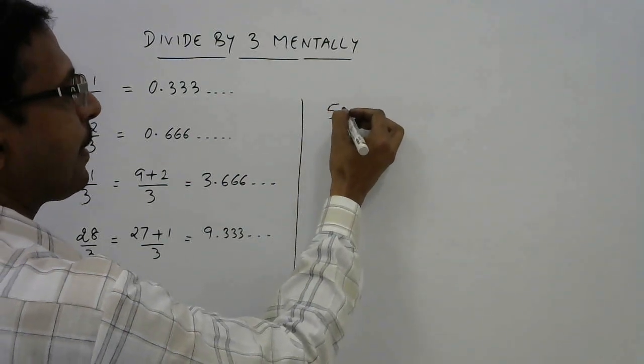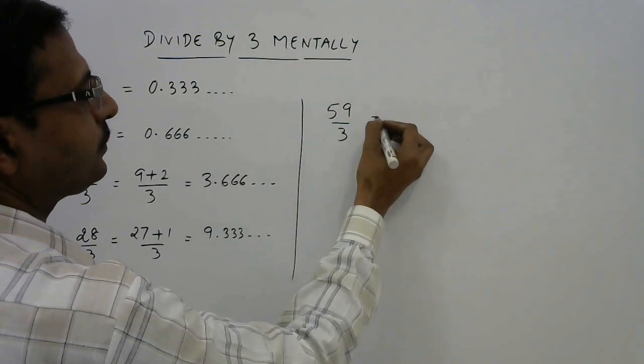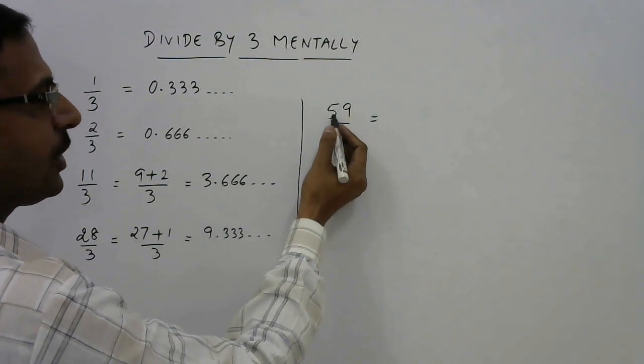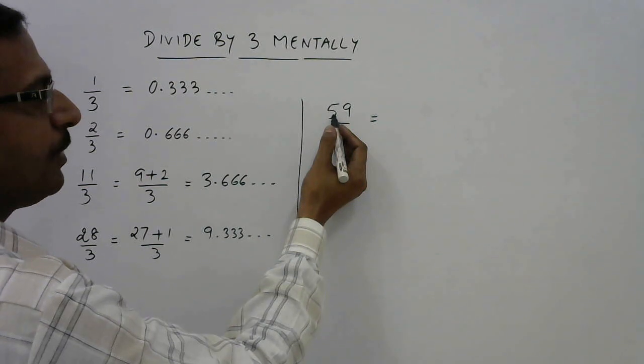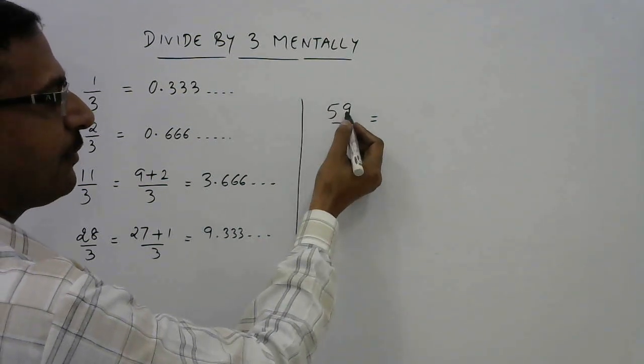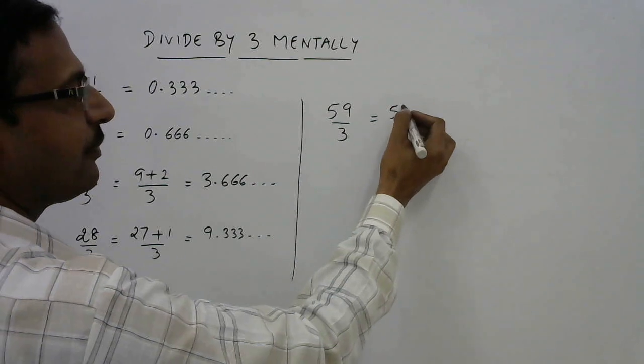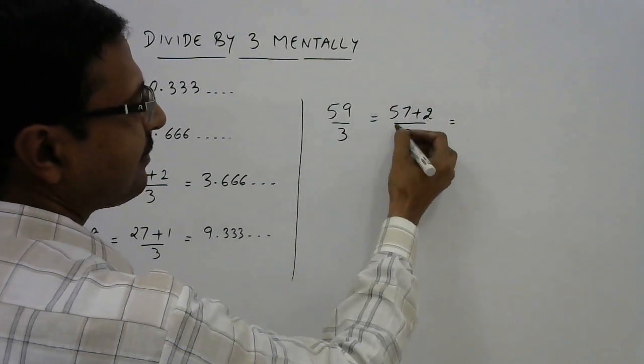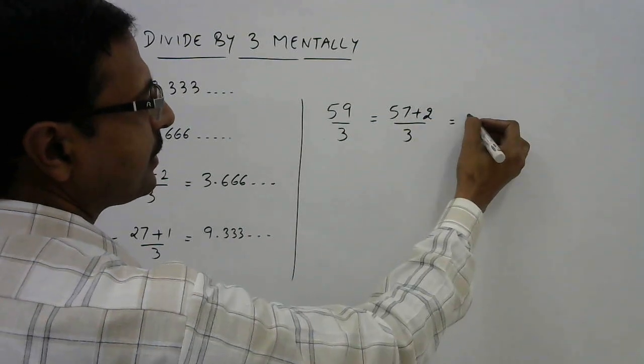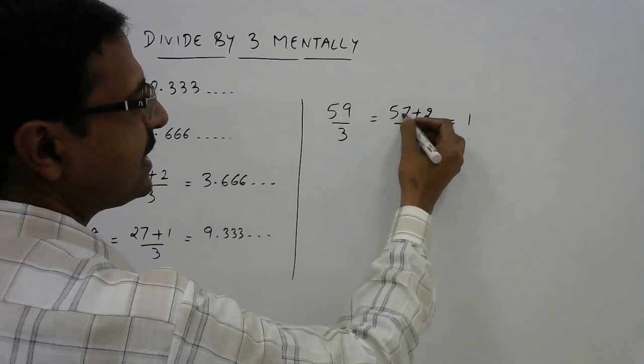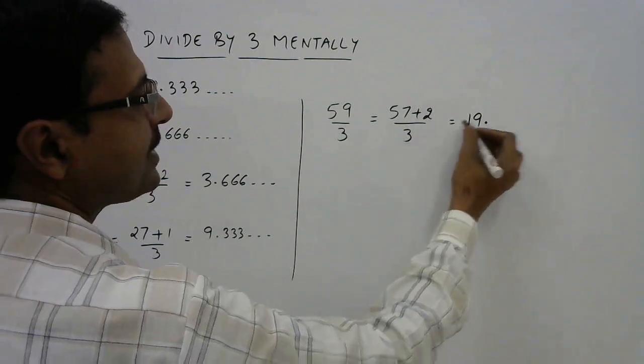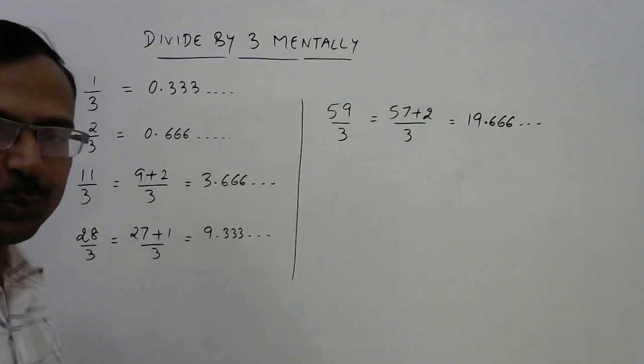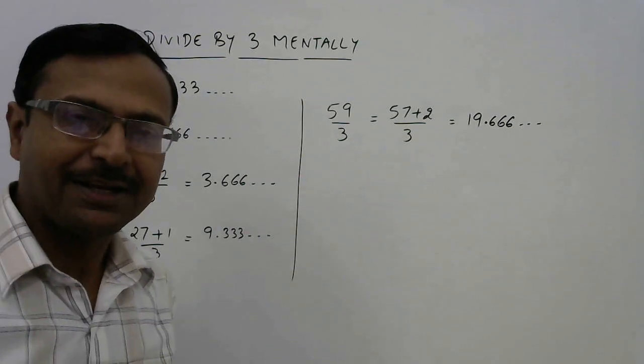Suppose you have 59 by 3. Now see 9 plus 5 is 14. 14 is not divisible by 3 but below 14 you have 12. So you have to reduce to 57 plus 2 by 3. Now 57 divided by 3, 3 nines are 27 and 2 by 3 means 6, 6, 6 and so on. This is what you have to do for dividing any number by 3.